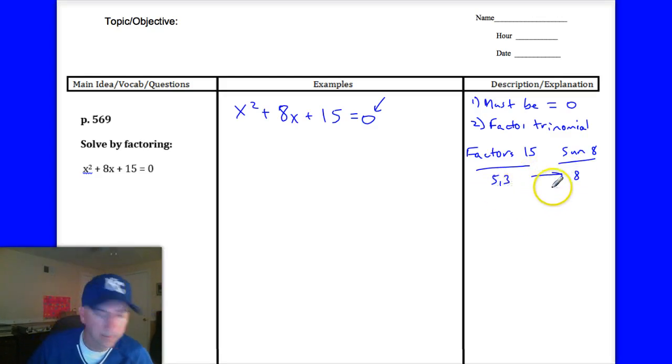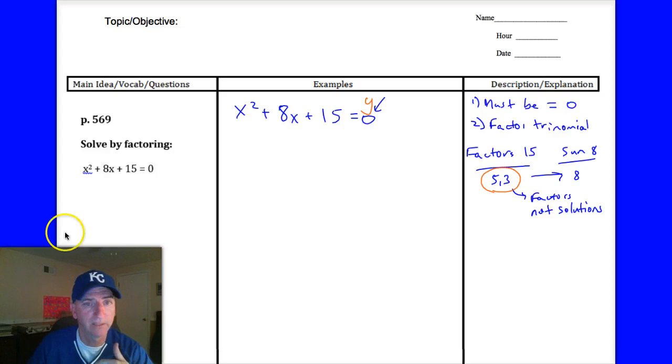So now let me mention that these are the factors, not the solution. These are the factors, not solutions. And you need to know the difference between those two things. The factors are the things that will multiply back to that trinomial. The solutions are the values of Y, which is this. This is Y right here. Y is 0. We want to know what is X when Y is 0. So that's what you're finding here. So if I now factor this, I found my factors of 5 and 3. So remember how that works? That would be X plus 5 times X plus 3.